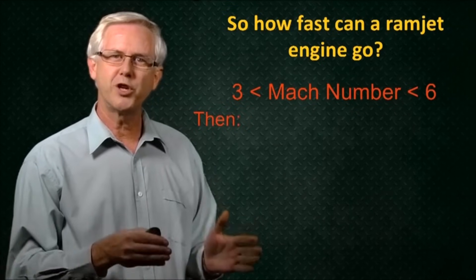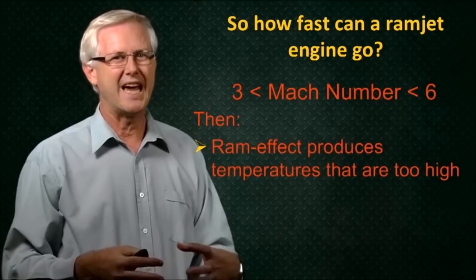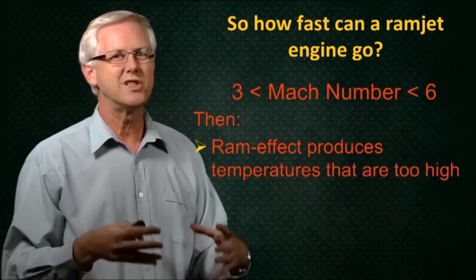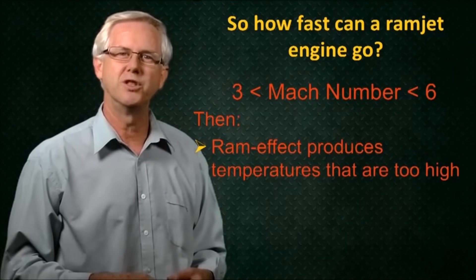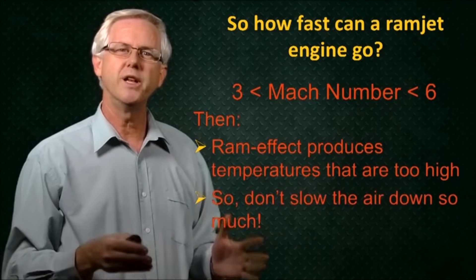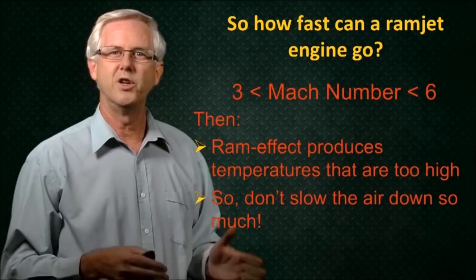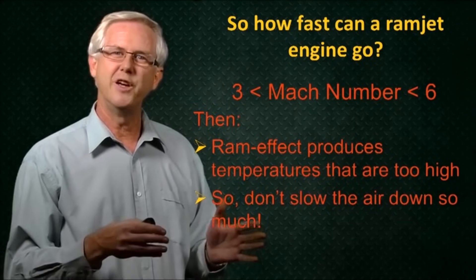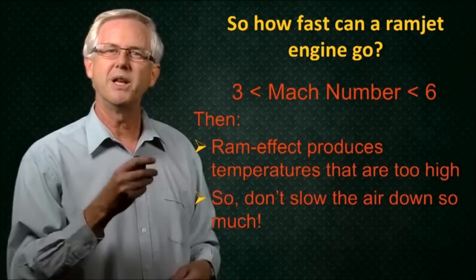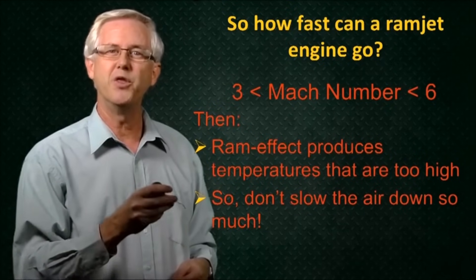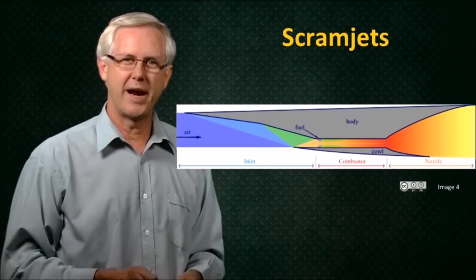Then if we want to try to push a ramjet up to higher speeds, just the ram effect of forcing the air into the engine raises the pressure and temperature up to levels where the temperature is just too high to be able to do good combustion. So we really don't need to slow the air down to subsonic conditions. What we can do instead is slow the flow down just a little bit, thus raising its pressure and temperature a bit, but leave it supersonic and see if we can burn the fuel in the air. And an engine that does just that is called a scramjet.